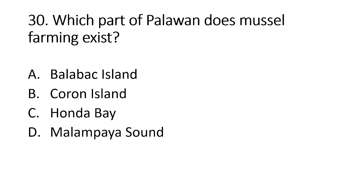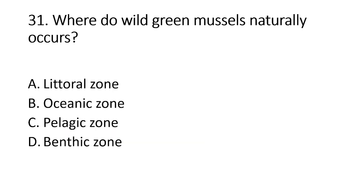Number 30. Which part of Palawan does mussel farming exist? A. Balabak Island. B. Curran Island. C. Honda Bay. D. Malampaya Sound. The answer is letter D, mussel farming has only been successfully undertaken in Malampaya Sound. Number 31. Where do wild green mussels naturally occur? A. Littoral zone. B. Oceanic zone. C. Pelagic zone. D. Benthic zone. The answer is letter A, mussels naturally occur at the littoral zone.